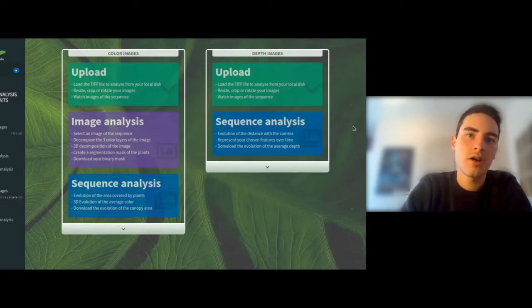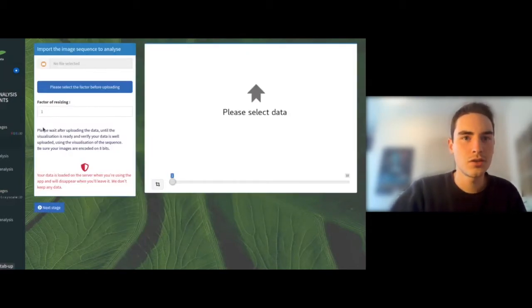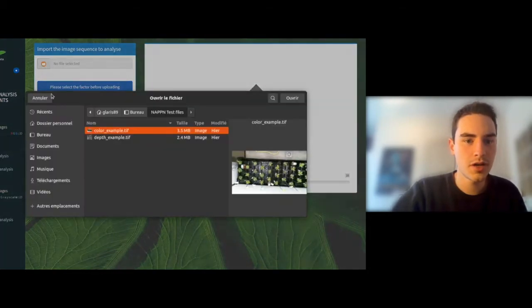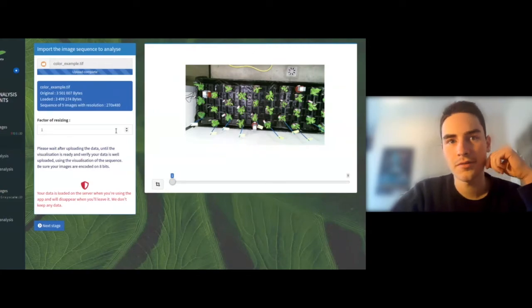Based on this, we are going to analyze the evolution of depth, color, and the covered surface of plants. So we'll start with a color example. Here we have salads in top view and we want to characterize their growth.